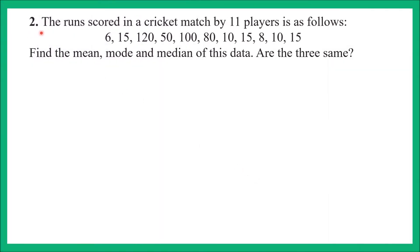Question number 2: The runs scored in a cricket match by 11 players are as follows — 6, 15, 120, 50, 100, 80, 10, 15, 8, 10, 15. Find the mean, mode, and median of this data. Are the three same? We need to use this data to find mean, mode, and median, and then check if they are the same. First, arrange the data in ascending order.